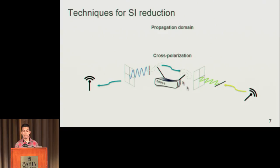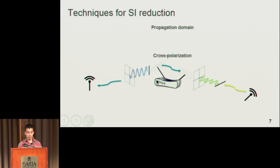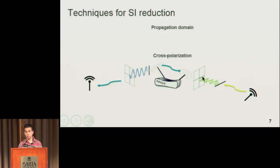We are applying cross-polarization in the propagation domain, placing the transmitter antenna vertically and the receiver horizontally, and we are getting a significant reduction of the self-interference — up to 42 dBs of cancellation.